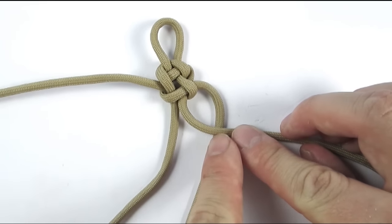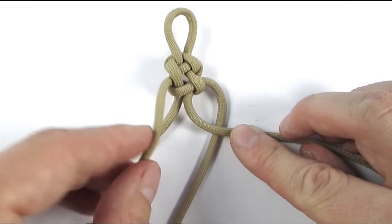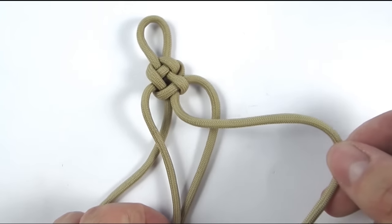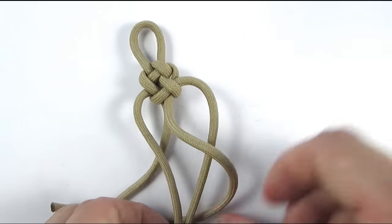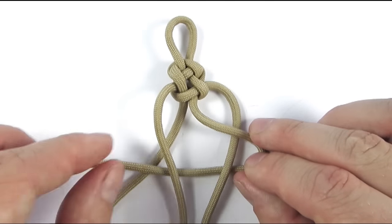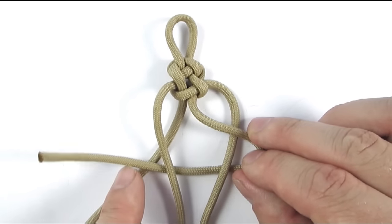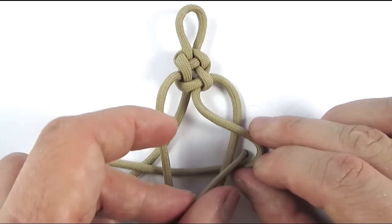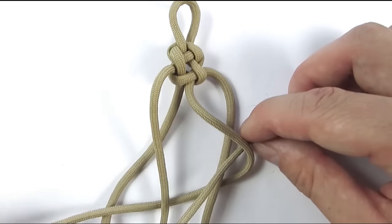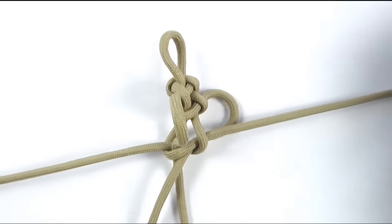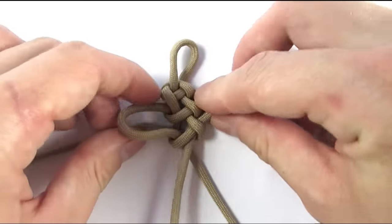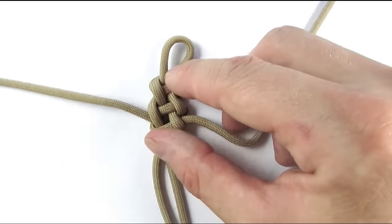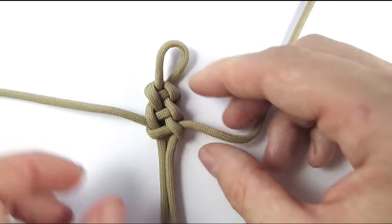So again take your right cord and place it under the right middle cord, with your left cord go over the left middle cord and then tie a cobra knot like we did before. And with this we have set up our top part of the cross and we're now going to move on to making our bottom part.